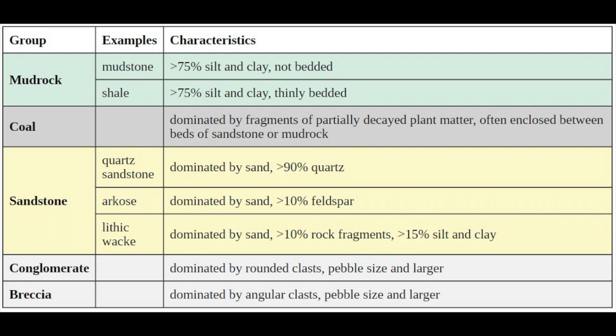Mudrocks are made of fine particles. Coals are dominated by organic matter. Sandstones are made of sand. Conglomerates have large, round clasts in a fine-grain matrix, and breccias are made of broken, angular clasts in a fine-grain matrix.